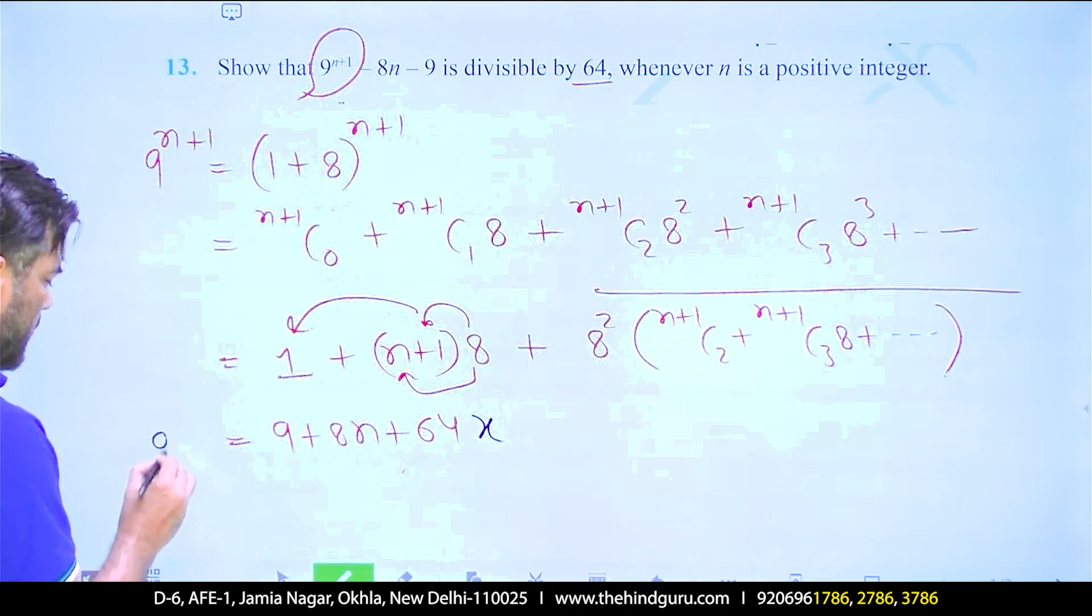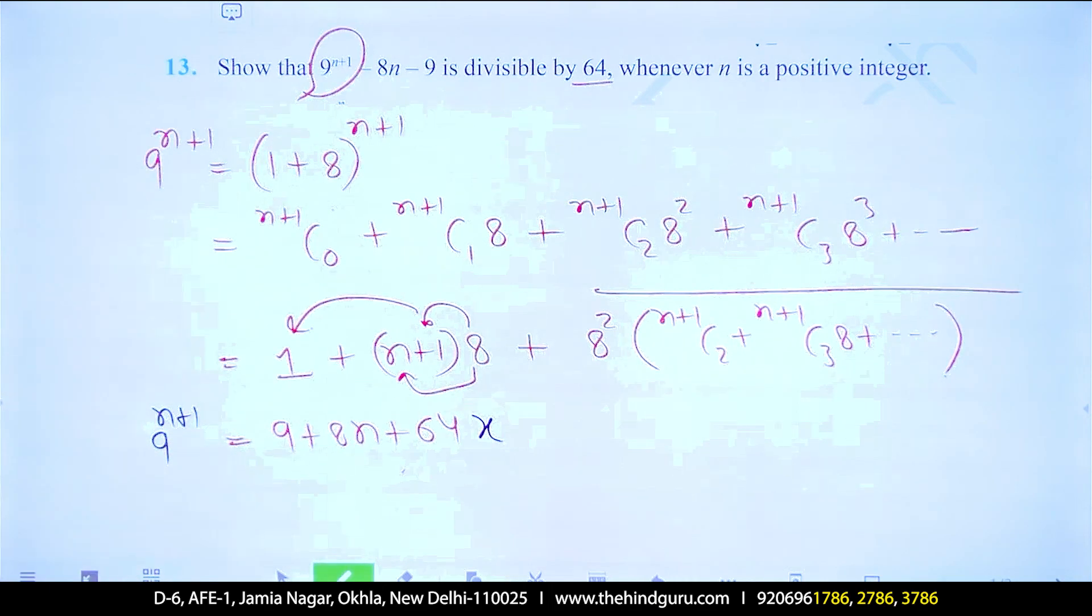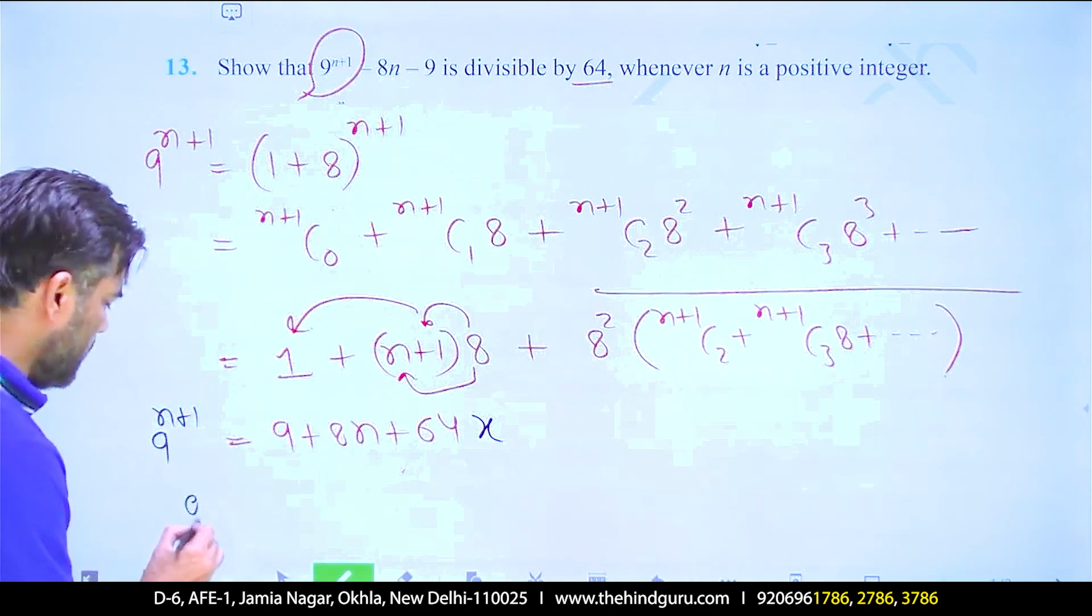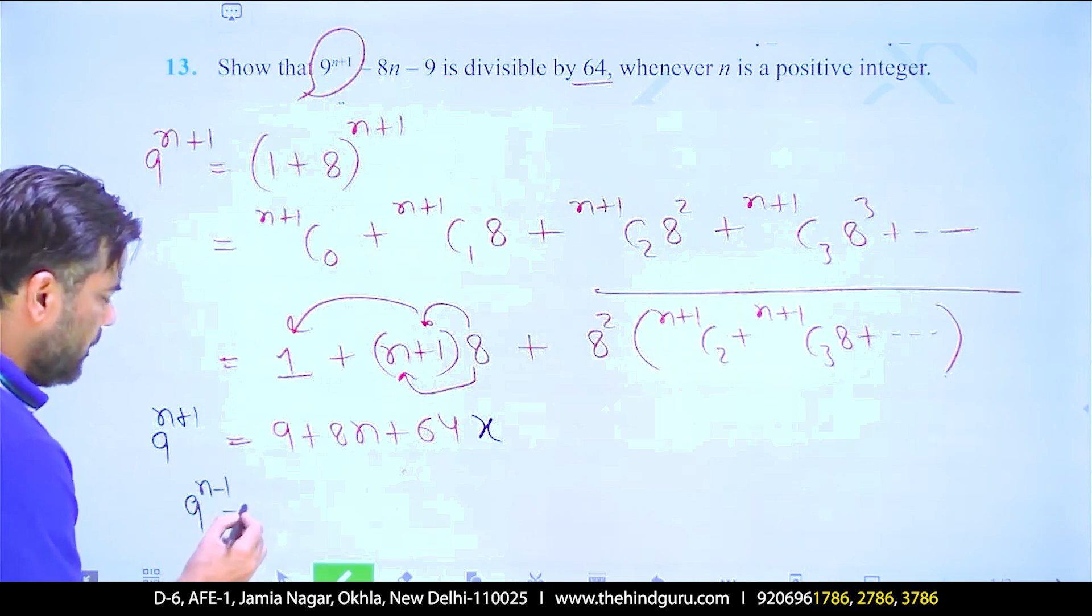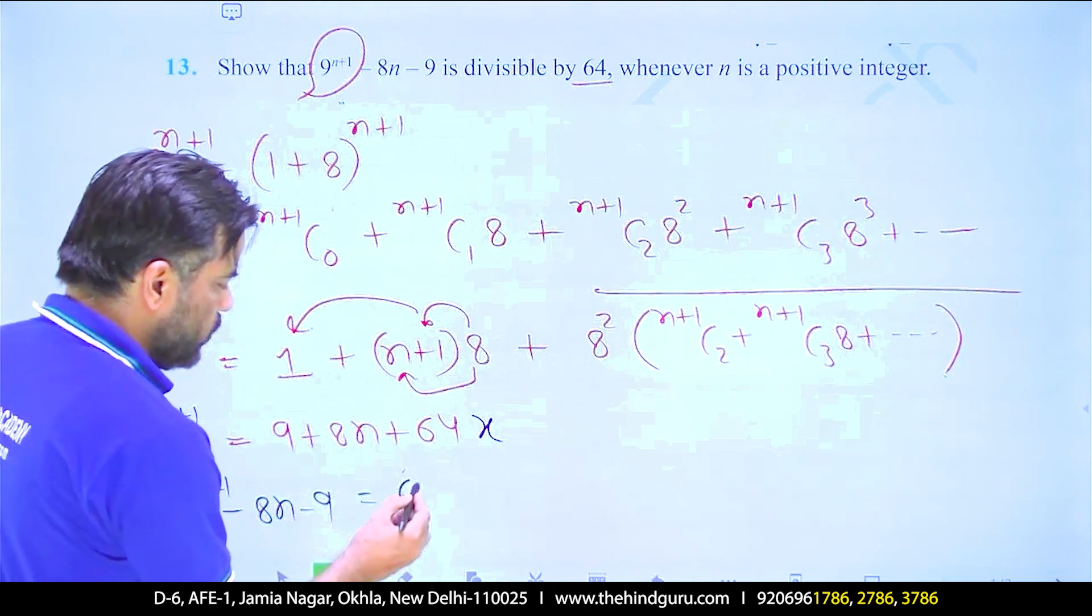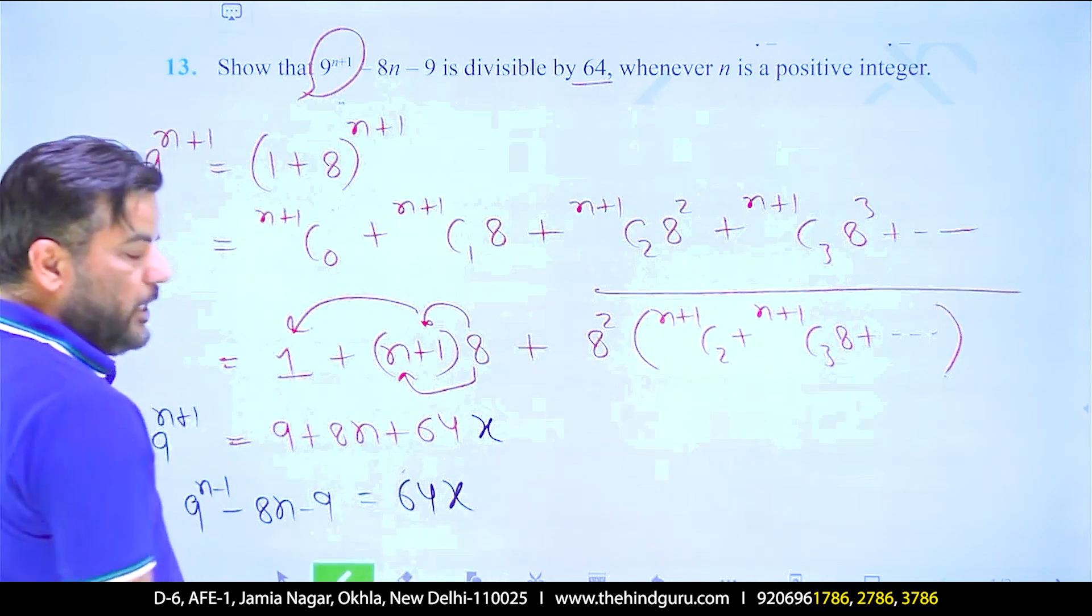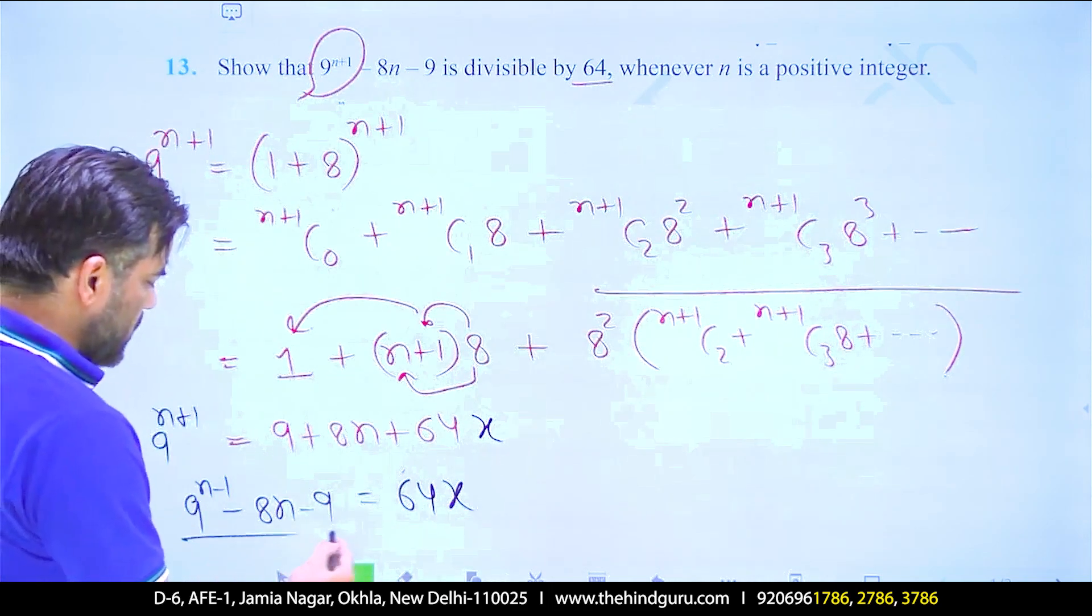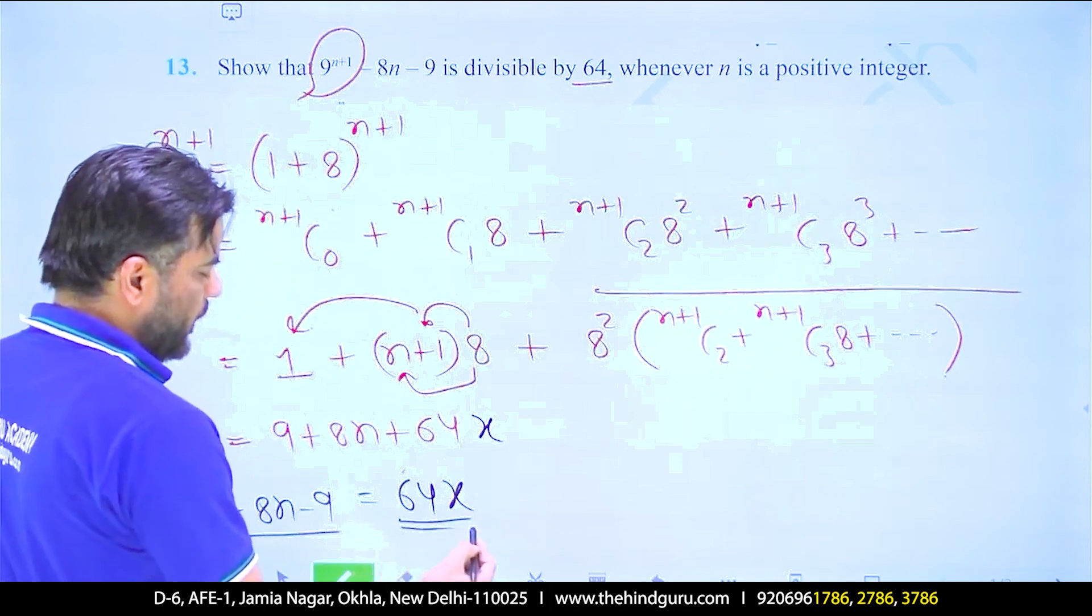Left side is 9 to the power n plus 1. Now take this all together. So you have 9 to the power n plus 1 minus 8n minus 9 equals 64x. It means this expression is completely divisible by 64.